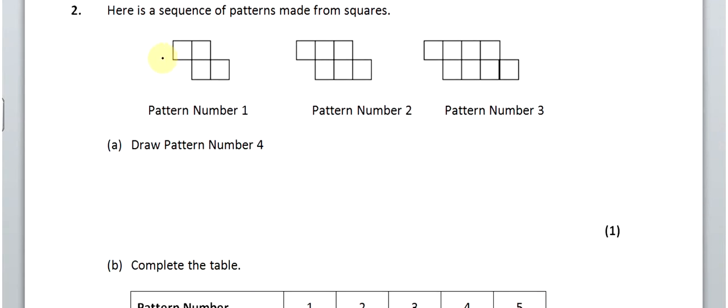Okay, sequence of patterns, a bit of an nth term rule problem here. So we've got our pattern, draw pattern number 4, just be careful when you do this, because how annoyed would you be if you lost marks just for doing this carelessly? So, 1, 2, 3, 4, so mine's going to have 5, so 1, 2, 3, 4, 5, and the same on the bottom. Doesn't have to be a Picasso, but it does have to have the right number of bits in it.